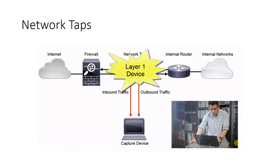The network tap is installed between two network devices — for example, a switch and a workstation — where it provides one or more ports that output the traffic going between the devices. Network taps operate at layer one and do not perform packet inspection, so they don't introduce congestion or degrade the performance of the link. The security analyst should have a basic understanding of network tap benefits, limitations, and operations.